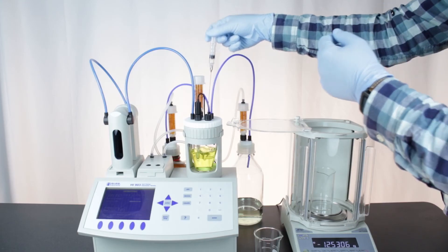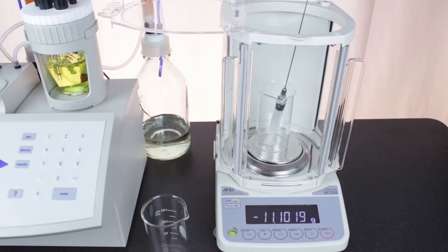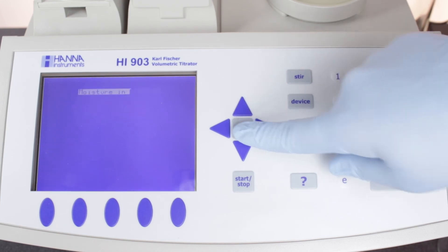Remove the syringe and re-weigh it. The negative weight that appears is the number you enter on the titrator. After you enter the weight, press enter to begin the titration.